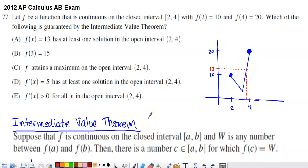So this is problem 77 from the 2012 AP Calc-AB exam. This calculator question is another one that doesn't require the use of a calculator. They tell us that we've got a function f. It is continuous on the interval from 2 to 4. They tell us that f of 2 is 10, f of 4 is 20.